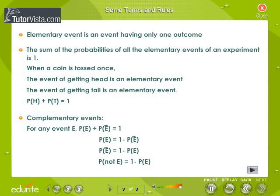Complementary Events: The event E-bar representing not E is called the complement of the event E. For any event E, P(not E) is equal to 1 minus P(E).